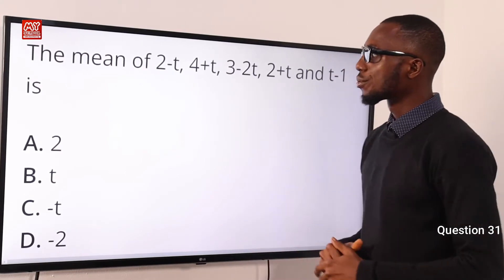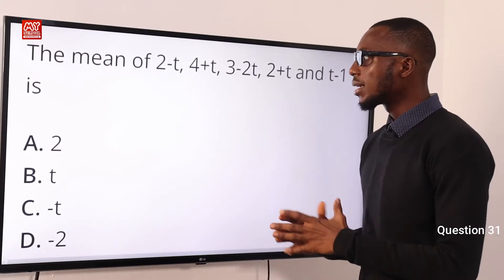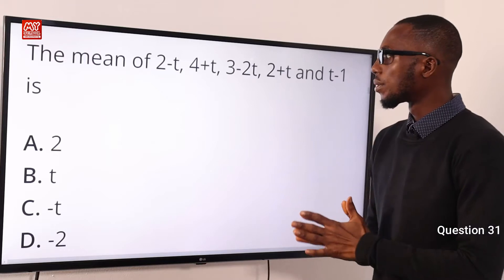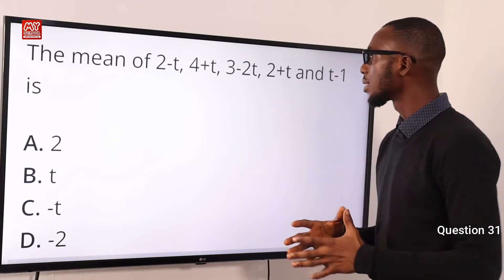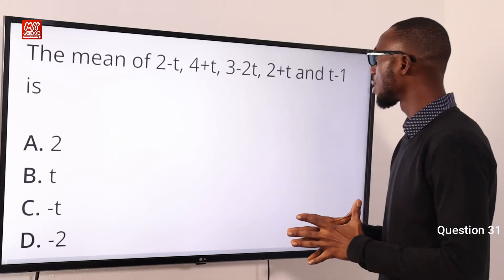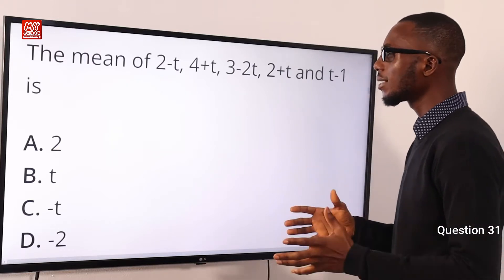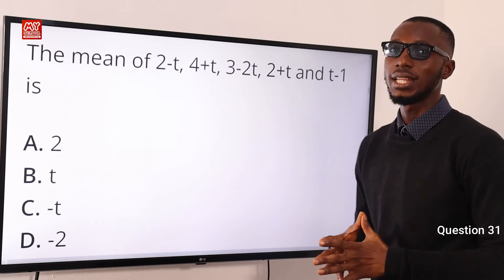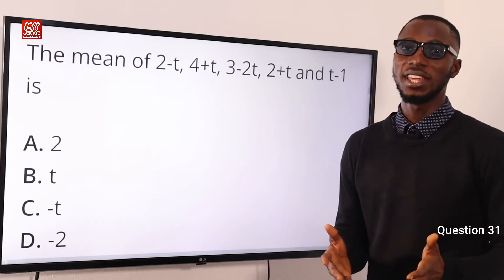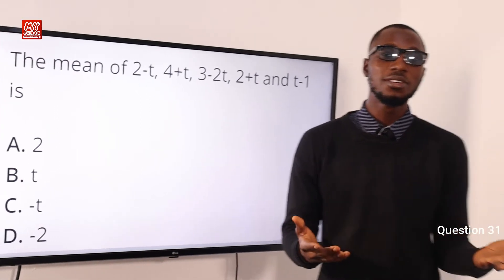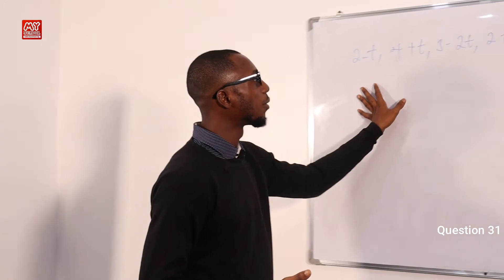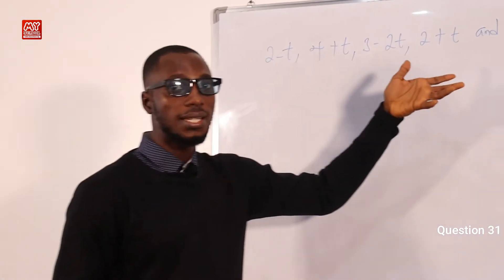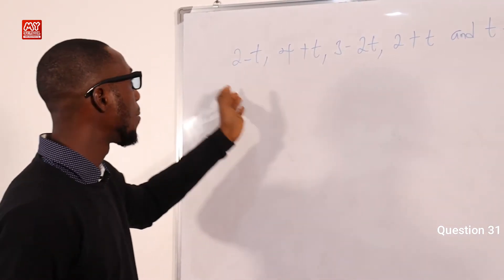Question 31: The mean of (2 minus t), (4 plus t), (3 minus 2t), (2 plus t), and (t minus 1) is what? To solve for the mean, you add up all of these values and find their average.